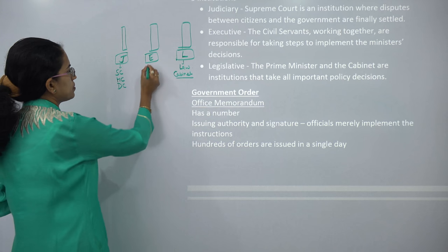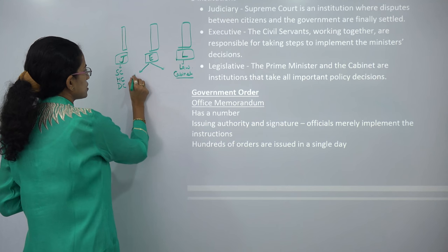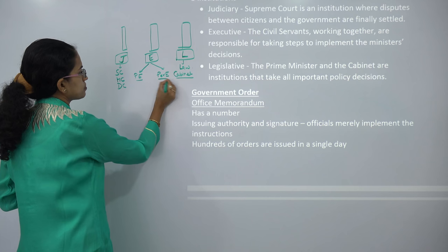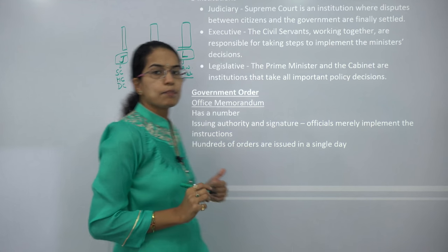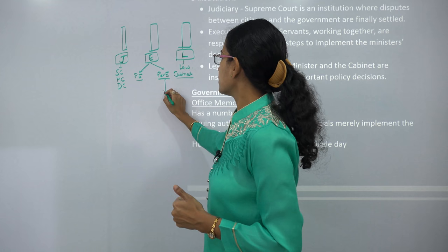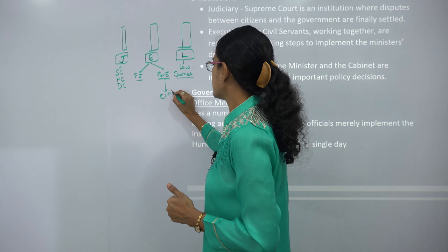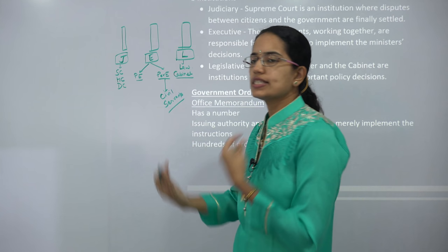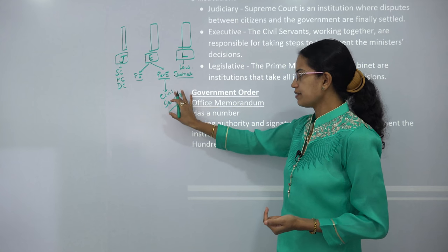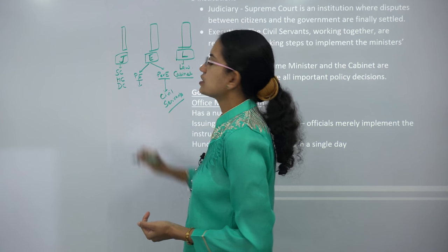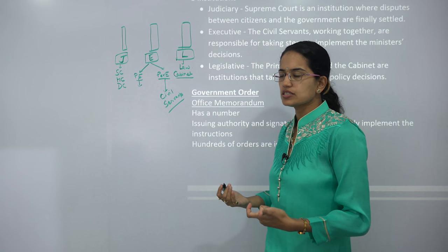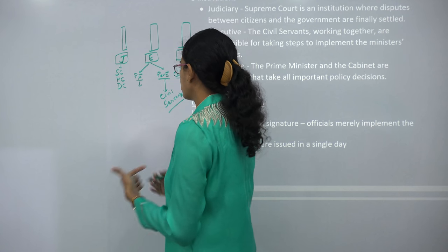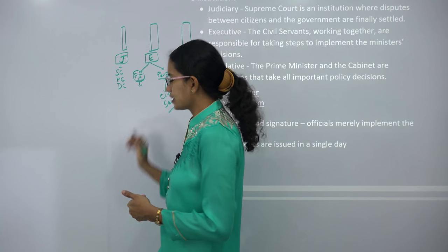Under the Executive, you have two types: political executives and permanent executives. The permanent executive works as a civil servant — they frame the laws and remain in place despite changes in the ruling party. Political executives, on the other hand, keep changing with elections. When a new party comes to power, new political executives come to power.